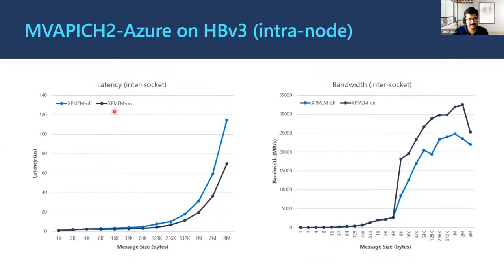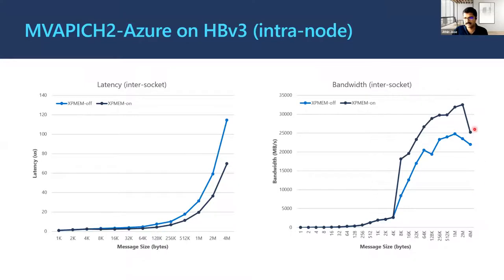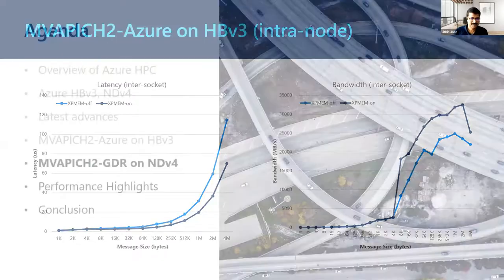Quickly on intranode latency — this is MVAPICH2 with XPM off and XPM on. For large message sizes, we are getting good advantage with MVAPICH2X with XPM enabled. Same improvement seen in both latency and bandwidth with XPM on.